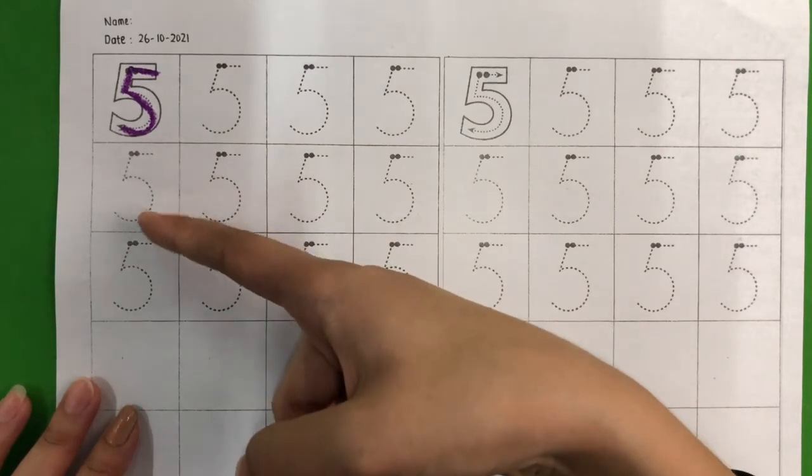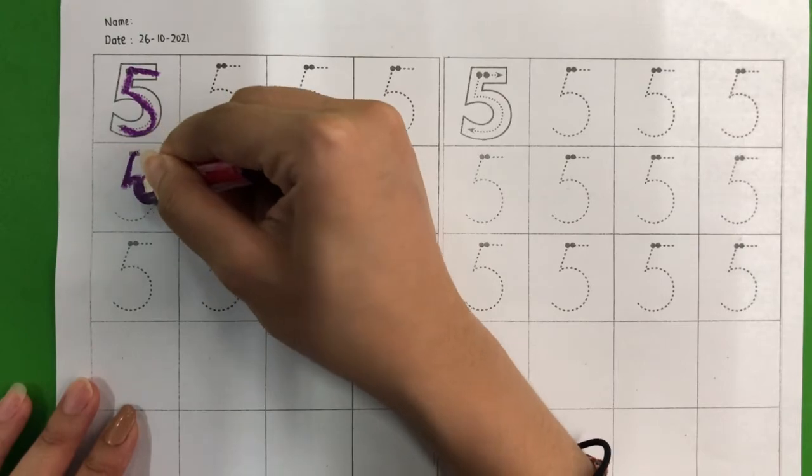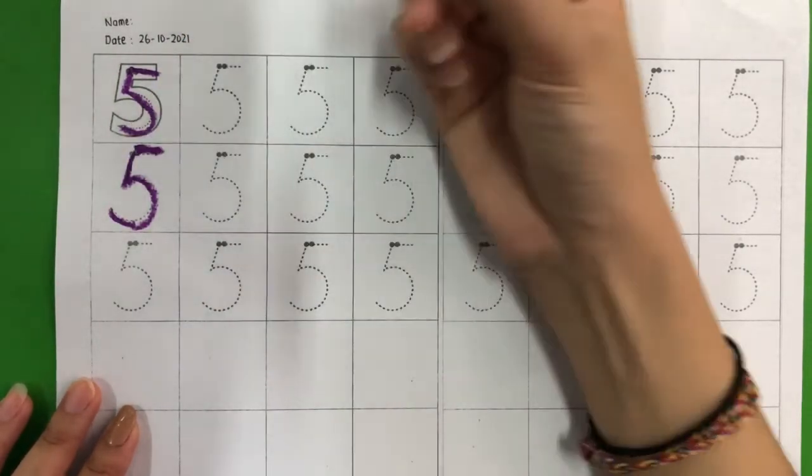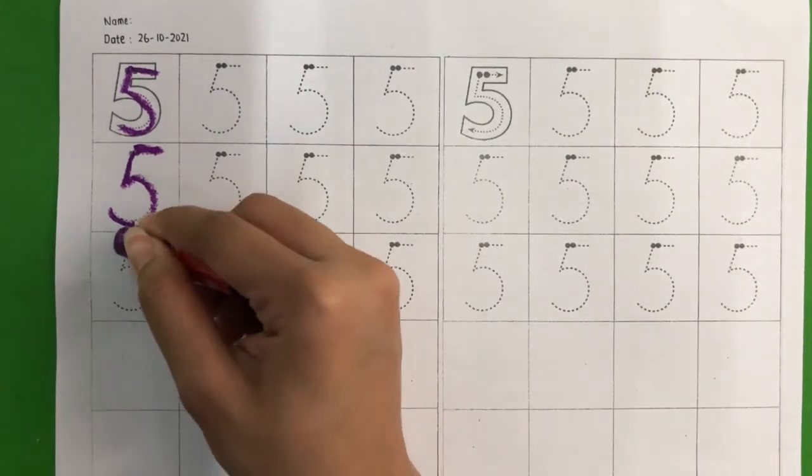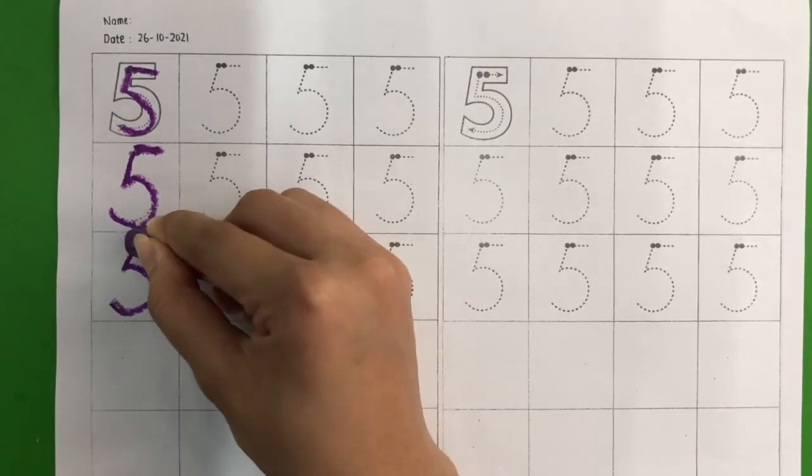Now we continue to the next one. Go down, and then draw a big curve, and close it. Go down, draw a big curve, and then close it.